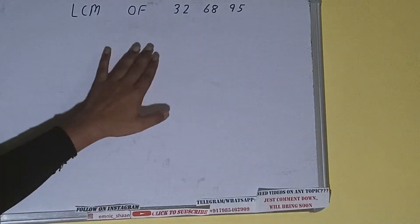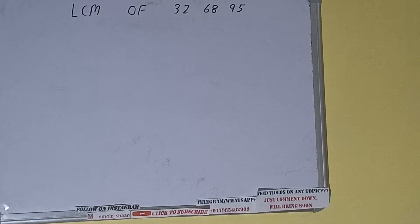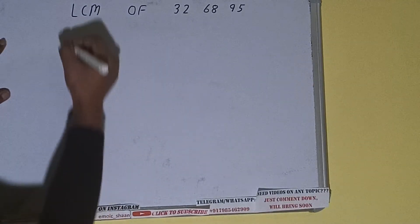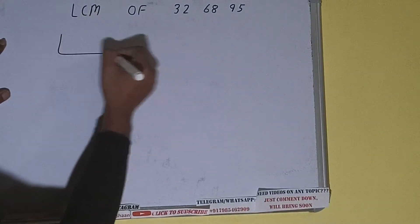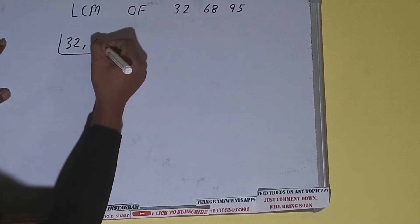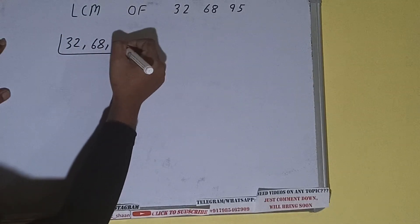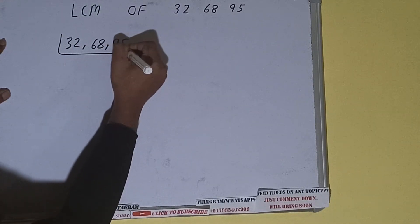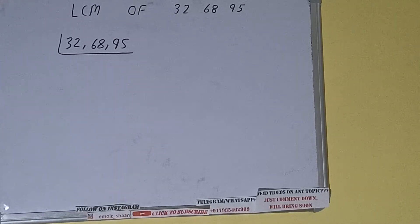Hello friends, in this video I'll be helping you with the LCM of the numbers 32, 68, and 95. So let's start. First of all, we need to write the numbers like this: 32, 68, 95. The next thing we need to do is start with the lowest prime number, that is 2.